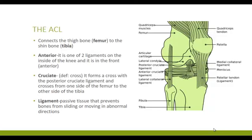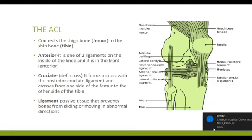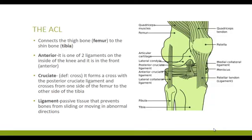The last part of the name is ligament, which means it is a passive tissue. Ligaments connect bone to bone and cannot be activated like muscles can. These two crossing ligaments form a stable structure that prevents the femur from sliding forward, backward, side to side, or through other motions, thereby preventing various types of knee movements from occurring.